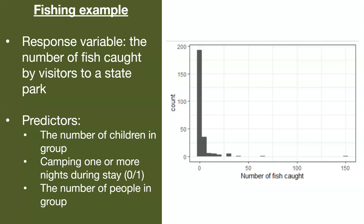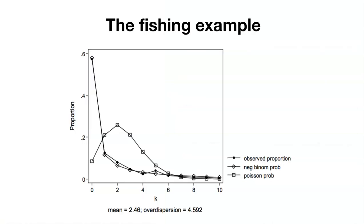The last predictor is just the number of people in the group. Again, maybe if you have lots of people in your group, maybe more of them are fishing, you'll catch more fish.